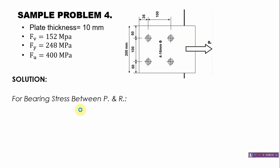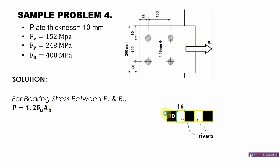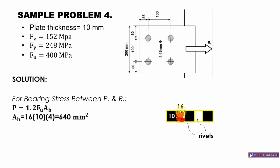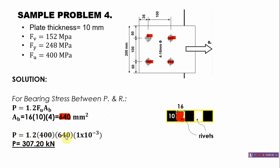For bearing stress between the plate and the rivets, using 1.2 × F_u × A_b: the bearing area A_b = 16 × 10 × 4 = 640 mm². Substituting: P = 1.2 × 400 × 640 × 10⁻³ = 307.20 kN.